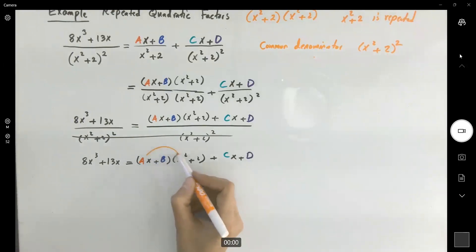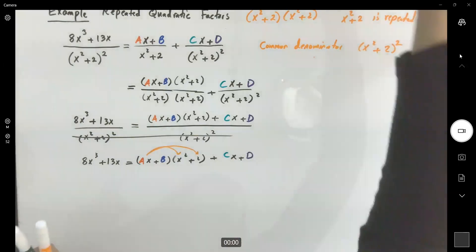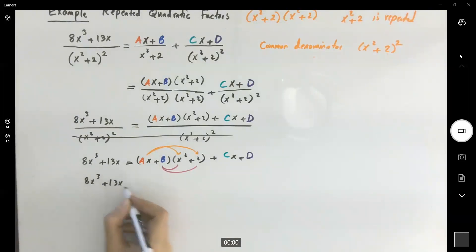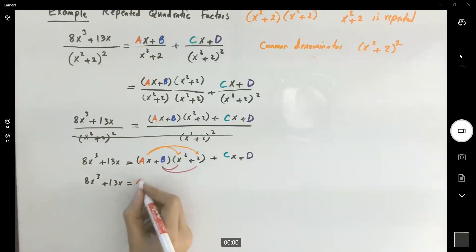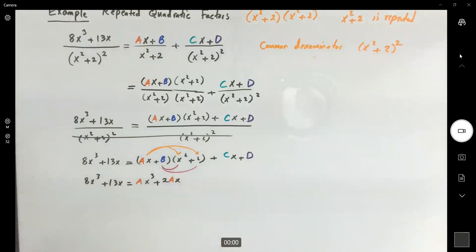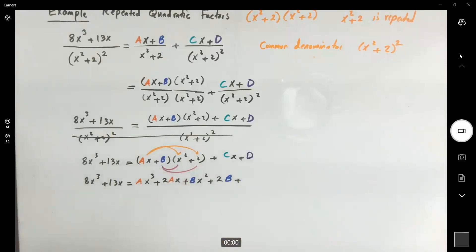I'm going to distribute ax into the parentheses and then distribute b into the parentheses. So 8x cubed plus 13x equals ax cubed plus 2ax from distributing ax, plus bx squared plus 2b from distributing b, plus cx plus d.